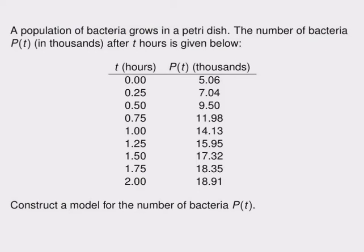Let's take a look at our situation here. We have a population of bacteria growing in a petri dish, and the number of bacteria, called P, which is measured in thousands of bacteria, after t hours is given in this table. You can see that we measured the number of bacteria every 15 minutes, or a quarter of an hour. And we want to create a model for the number of bacteria, presumably so that we can predict how they'll grow in the future.